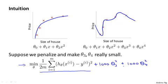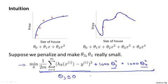If we minimize this function, the only way to make this new cost function small is if theta 3 and theta 4 are small. Because otherwise, if you have 1,000 times theta 3, this new cost function is going to be big. So when we minimize this new function, we're going to end up with theta 3 close to 0 and theta 4 close to 0. That's as if we're getting rid of these two terms. If theta 3 and theta 4 are close to 0, we're basically left with a quadratic function.